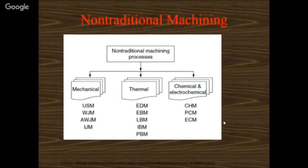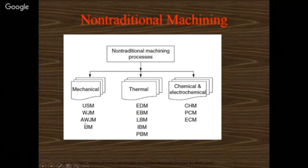Classifying non-traditional machining: mechanical processes include USM (ultrasonic machining), water jet machining, abrasive water jet machining, and ion jet machining. Thermal processes include electro discharge machining, electron beam machining, laser beam machining, ion beam, and plasma beam. Chemical machining uses only chemical help, and electrochemical machining uses electrochemical help. These are the thermal and chemical-related processes.